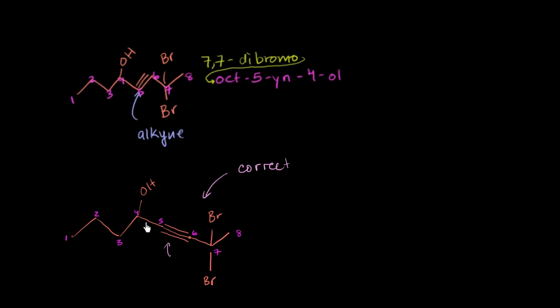So whenever you see an alkyne drawn, the triple bonds should essentially straighten out. It should straighten out the molecule.